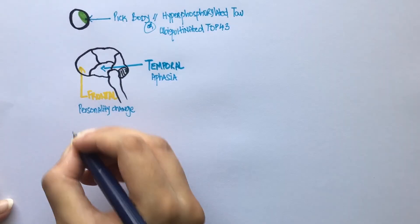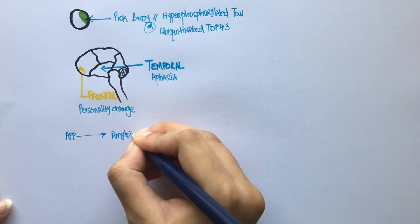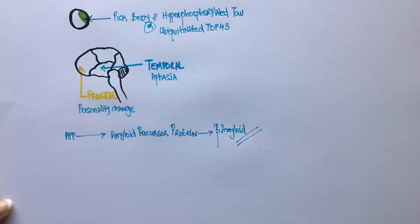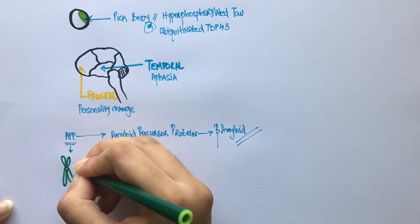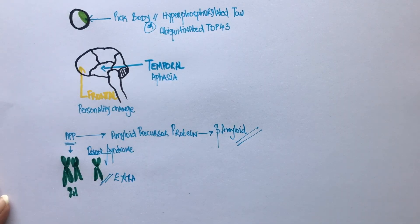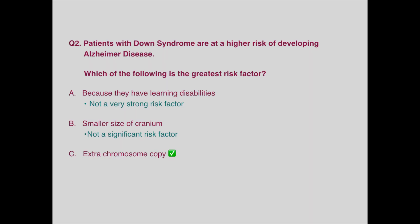The APP gene codes for amyloid precursor protein. Accumulation of beta-amyloid in the brain is one of the main pathologies involved in Alzheimer's. The APP gene is present on chromosome number 21. Since people with Down syndrome have an extra copy of chromosome 21, they are at a higher risk of developing Alzheimer's. Small size of cranium is not a very significant risk factor for Alzheimer's. Although learning disabilities can predispose people to Alzheimer's, it is not a very strong risk factor as compared to having an extra copy of chromosome 21.